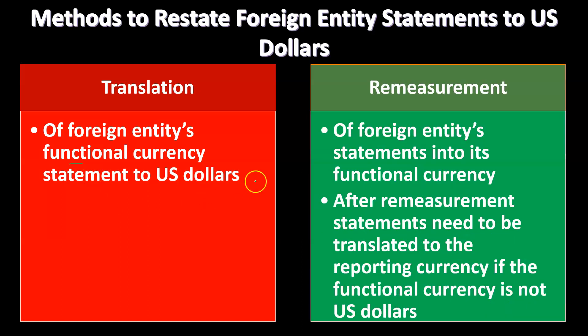There is also remeasurement of foreign entity statements into the functional currency. Remeasurement means the entity is running their bookkeeping in a currency that is not the functional currency. We use the term remeasure — rather than translate — to convert to the functional currency. After remeasurement, statements still need to be translated to the reporting currency if the functional currency is not the U.S. dollar.